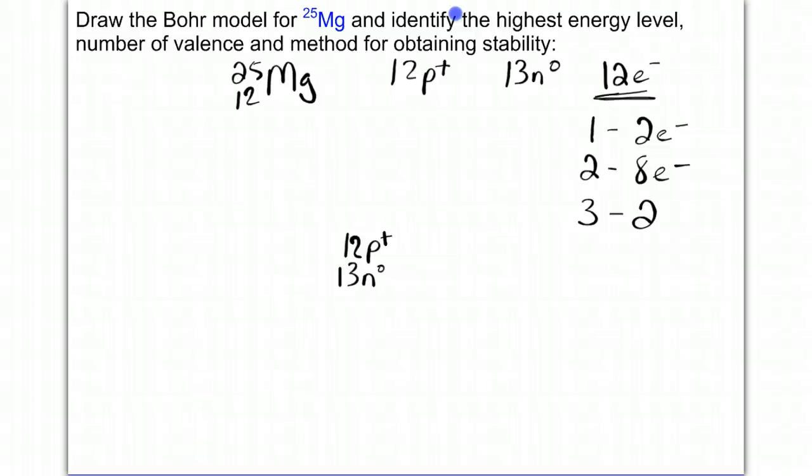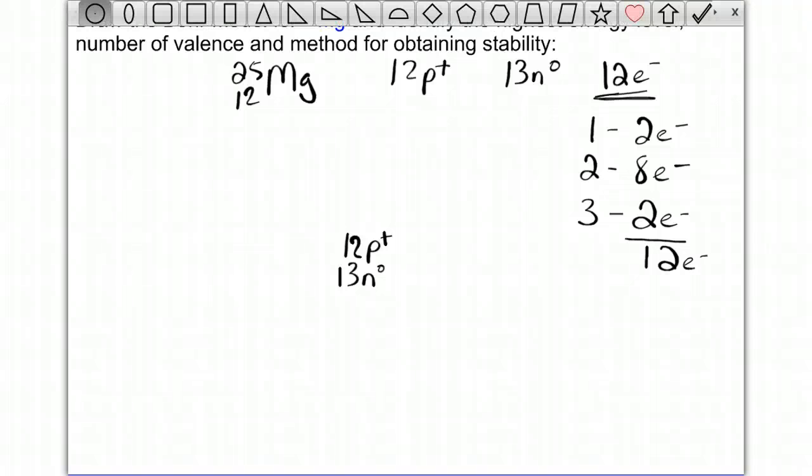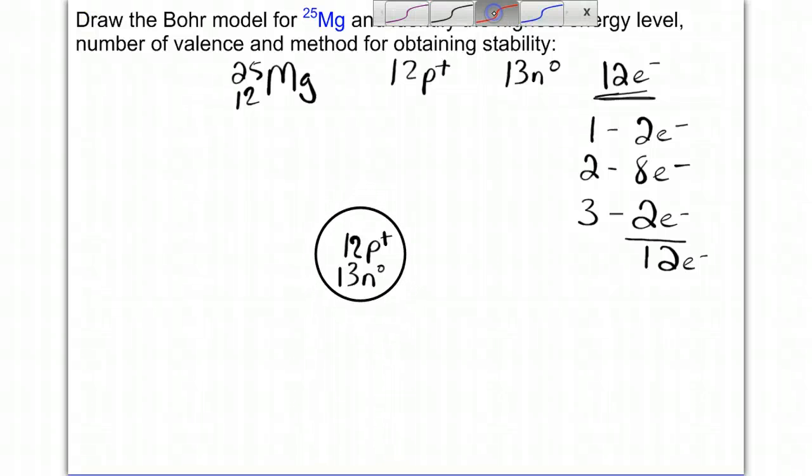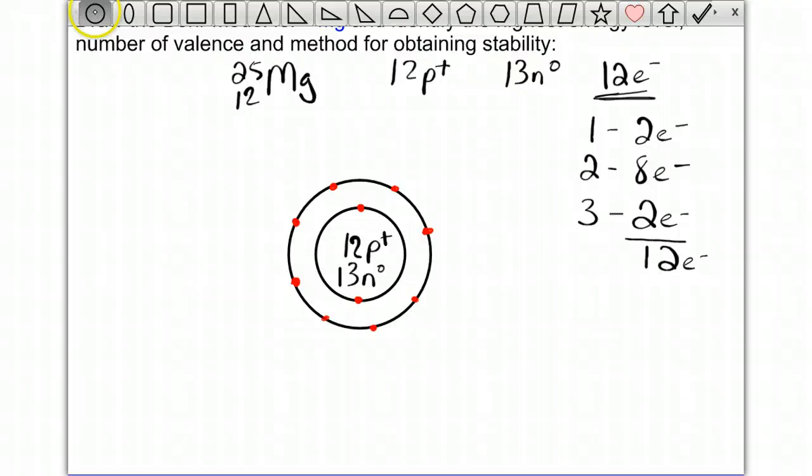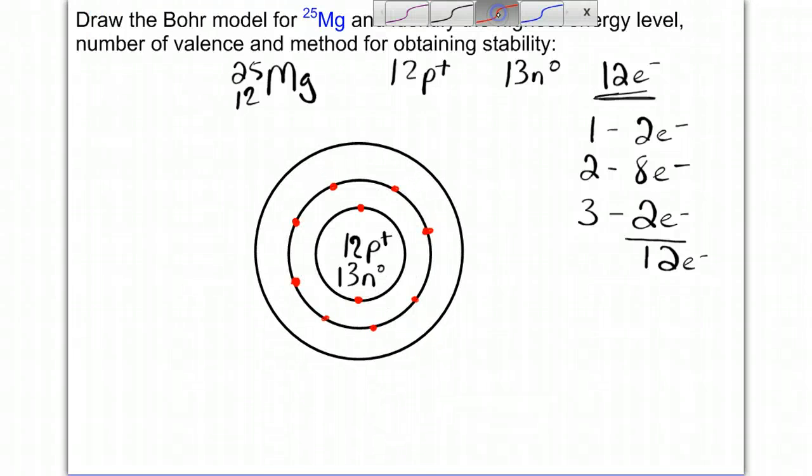Then I'm going to move on to the third energy level, and I only need 2 more electrons to give me my total of 12. So we'll start with our first energy level, 1, 2 electrons. Then my second energy level has 1, 2, 3, 4, 5, 6, 7, 8. It doesn't matter what order you place them in. You're just trying to put them as far apart from each other as possible. And then we have our third energy level, which has 2 electrons. So this has 2 valence electrons.